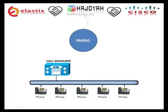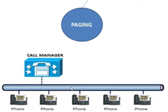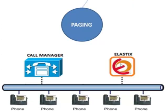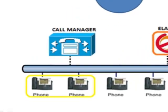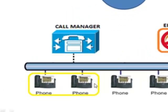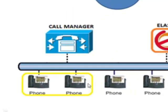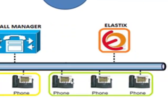Cisco Call Manager cannot create paging zones through its phone sets, so you are forced to use a third-party audio system. But after integration with Elastisk, Elastisk can create new paging zones through the phone sets connected to Call Manager.